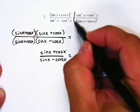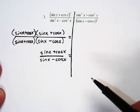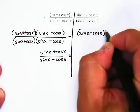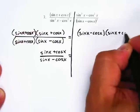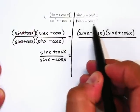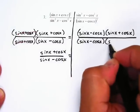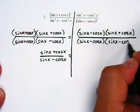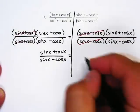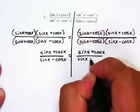I said I was going to work both sides, so I'll stay true to that. On the right side, the numerator is sine squared minus cosine squared — another difference of perfect squares — so I write it as sine of x minus cosine of x, times sine of x plus cosine of x. The denominator is sine of x minus cosine of x, quantity squared, written as sine of x minus cosine of x, times sine of x minus cosine of x. Again, things cancel, and I just have sine of x plus cosine of x over sine of x minus cosine of x.